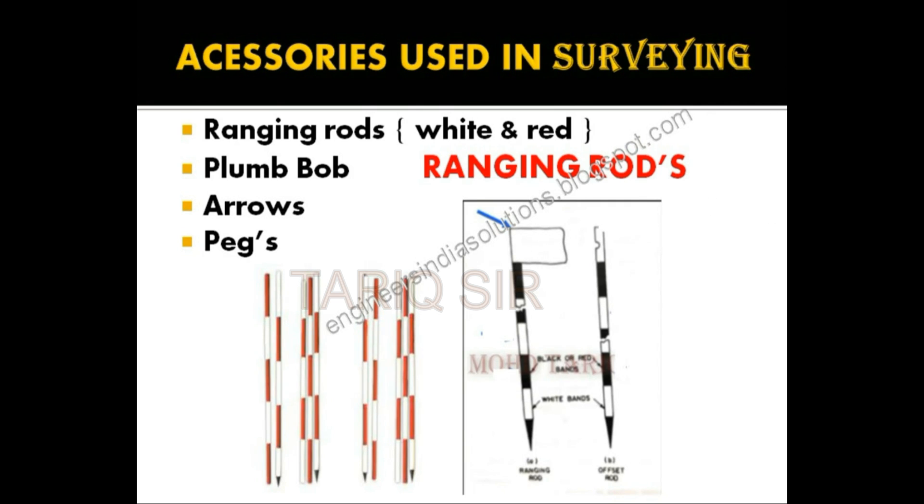Here we have a ranging rod, and this is about 20 centimeter red in color, then 20 centimeter white in color, and it is about 2 meters in length. The other type of rod is black and white, it is about 20 centimeter black and 20 centimeter white. This is all about a ranging rod.